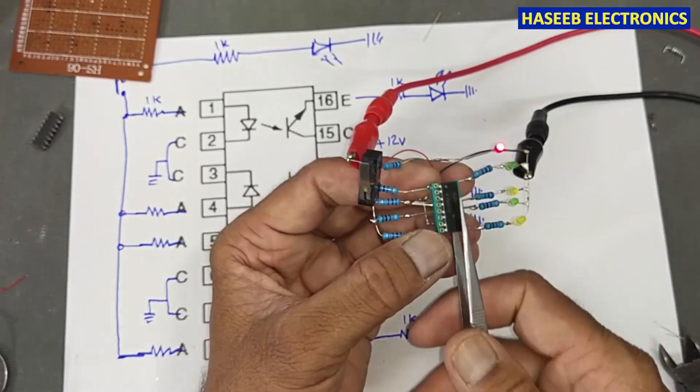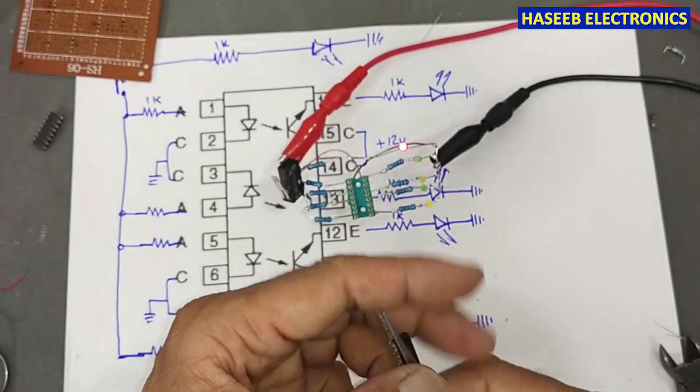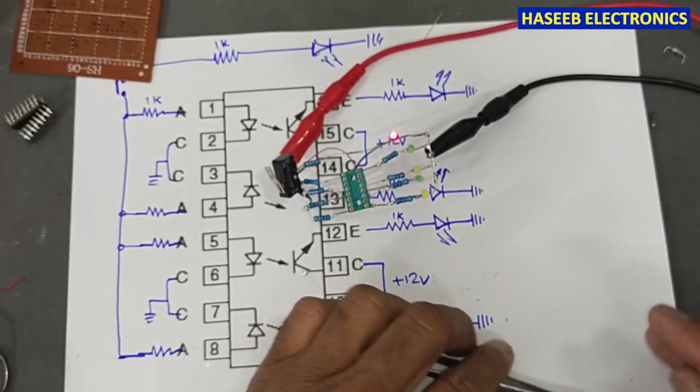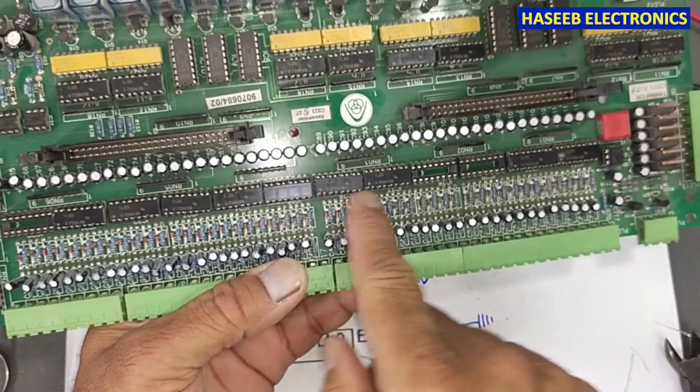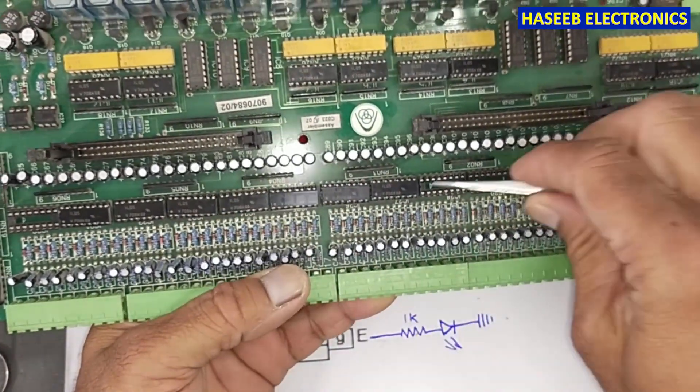This one is good. If you don't have an IC socket, you can also use female header pins. Here we have many ICs we can test very simply and easily.